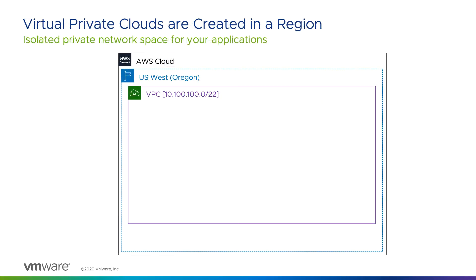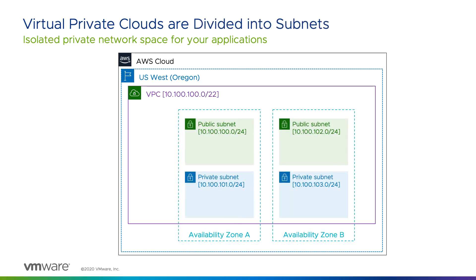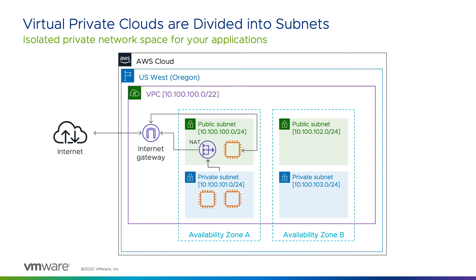Within a region, you create a virtual private cloud, or VPC, to provide isolated private network space for deploying your applications. Each VPC is divided into subnets, and you can decide if you want a subnet to be private or public, meaning accessible from the internet, according to your architecture and security requirements. Connections to VPCs and subnets are protected through a combination of access control lists and security groups.